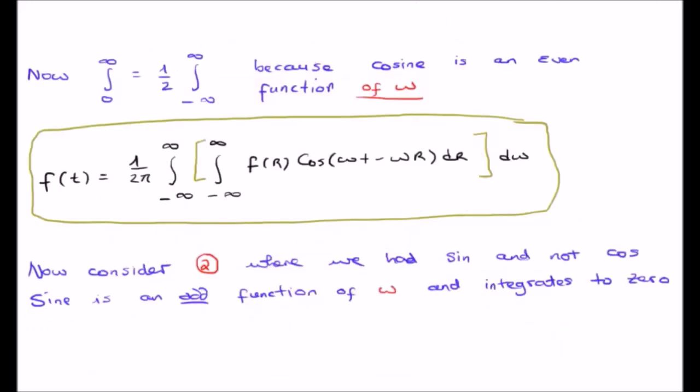The next thing for us to do is a bit of a sleight of hand. Let's consider this particular integral where we had a sine rather than a cosine. So let's pretend that in fact this here was sine.